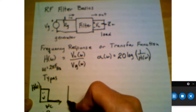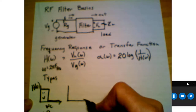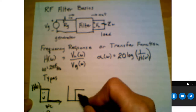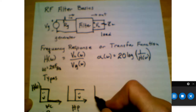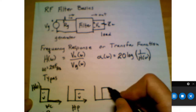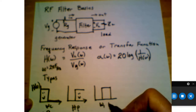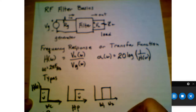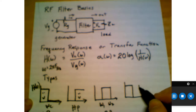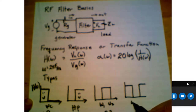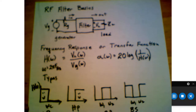A high-pass filter, by comparison, will pass high frequencies but not low frequencies. A band-pass filter will pass a specific band going from omega-1 to omega-2. Or we might have a notch or band-reject filter, where we pass everything except for a few frequencies in the middle. So this would be a band-stop, or band-reject, or notch filter.